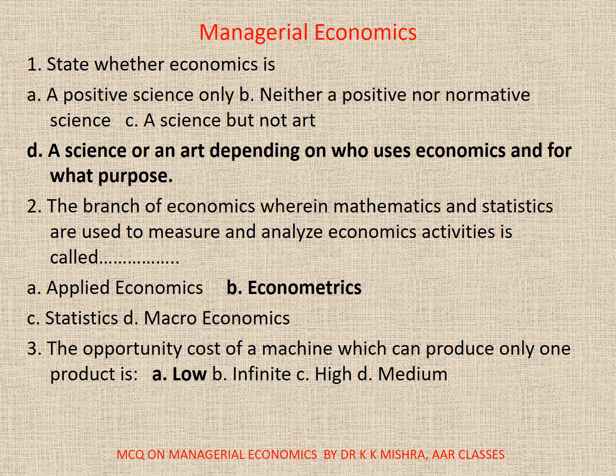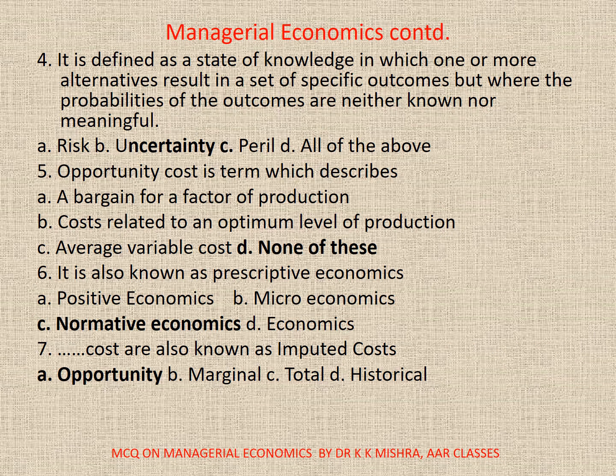Question 3: The opportunity cost of a machine which can produce only one product is A. low. Question 4: It is defined as a state of knowledge in which one or more alternatives result in a set of specific outcomes but where the probabilities of the outcomes are neither known nor meaningful. Question 5: The correct option is D: none.